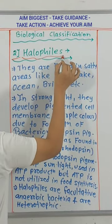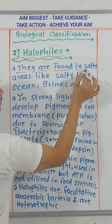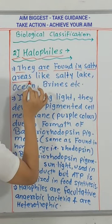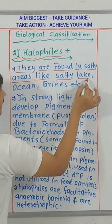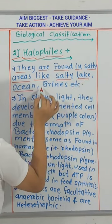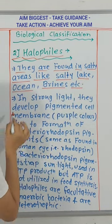Number 2. Halophytes. They are found in salty areas like salty lakes, oceans, brines, etc.